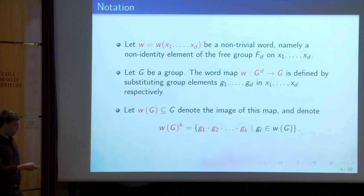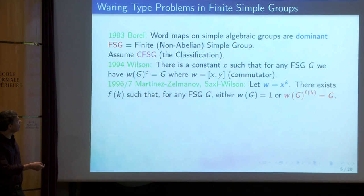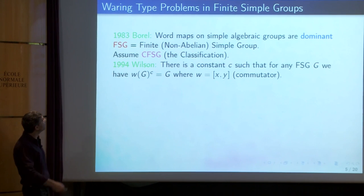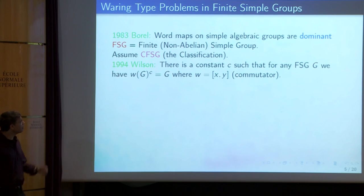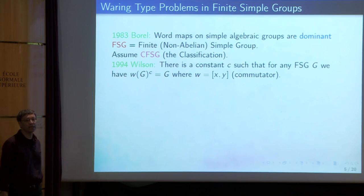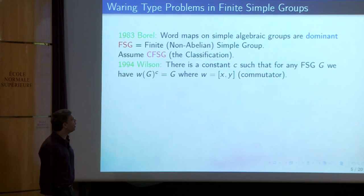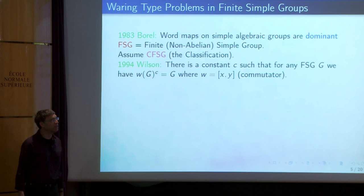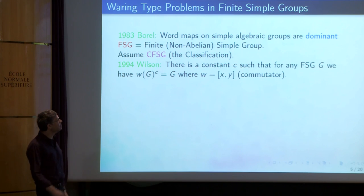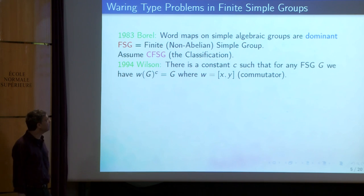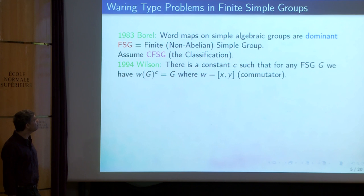Let's start with a theorem of Borel. Borel proved in 1983 that word maps are dominant on simple algebraic groups. This is a very important theorem and an important tool in many of the results. It means that the image of the word map is large — it's open dense, not contained in a proper sub-variety. This is particularly useful when you switch from algebraic groups to finite simple groups of Lie type.